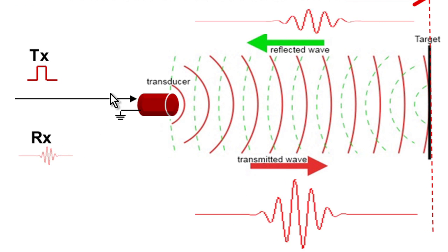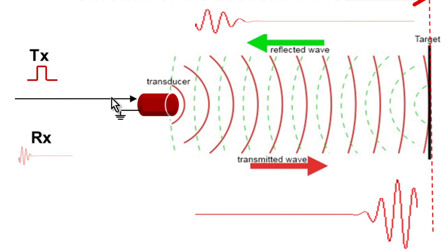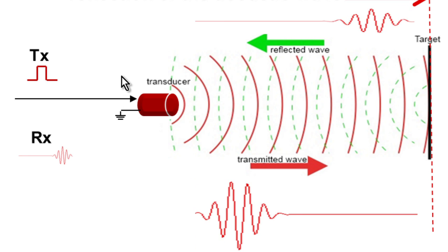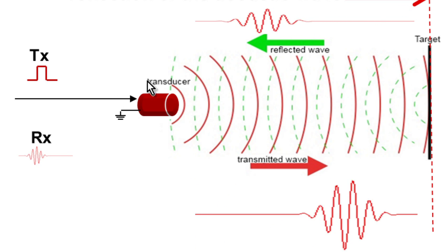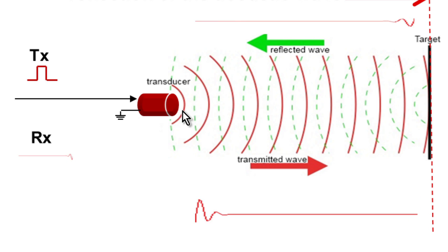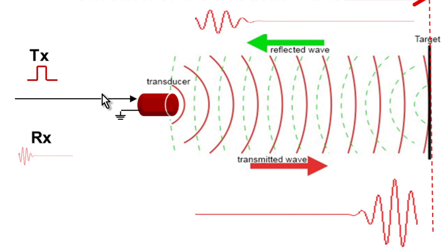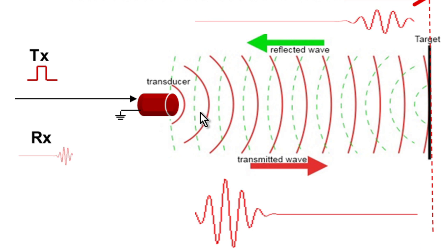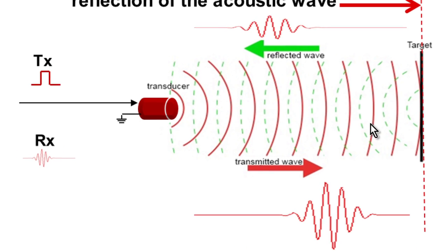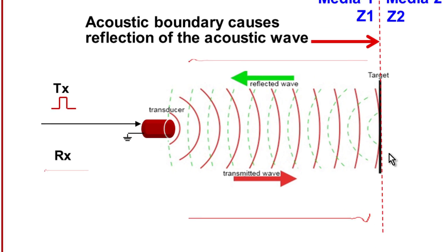ultrasound operates by having a piezoelectric transducer create an electromagnetic pulse into a medium that's created from electrical pulse exciting that transducer. That pulse then moves through the medium until it reaches an acoustic boundary.